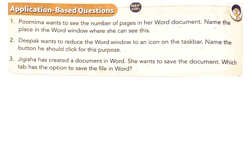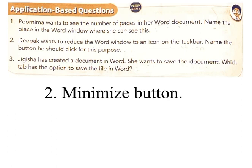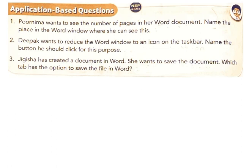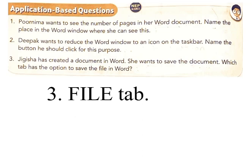Two: Deepak wants to reduce the Word window to an icon on the taskbar. Name the button he should click for this purpose. Answer: minimize button. Three: Jyotsna has created a document in Word and wants to save the document. Which tab has the option to save the file in Word? Answer: file tab.